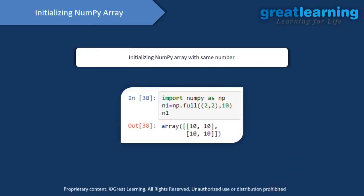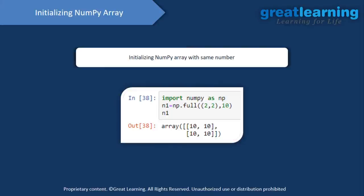Instead of zeros, if I want to fill a NumPy array with some other number, we use the np.full method. This takes two parameters: the dimensions and the fill value. For example, np.full with two comma two and value ten creates a 2×2 NumPy array comprising only the value ten.